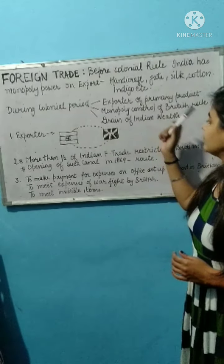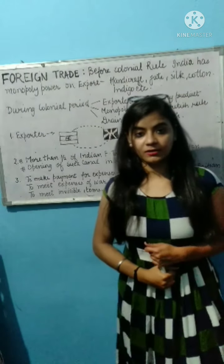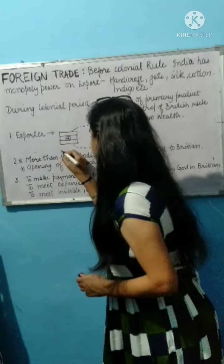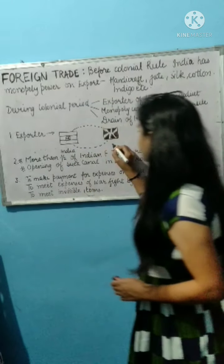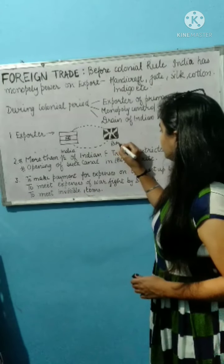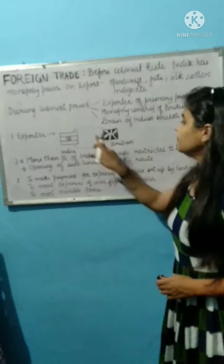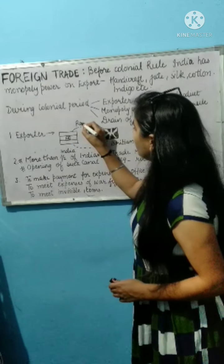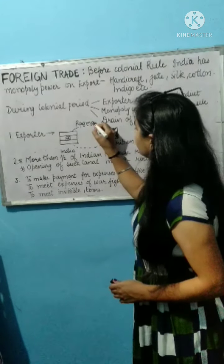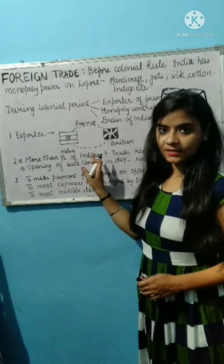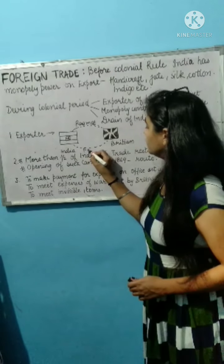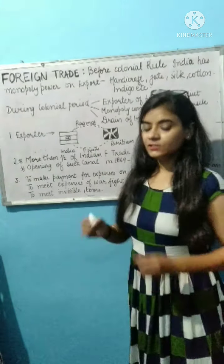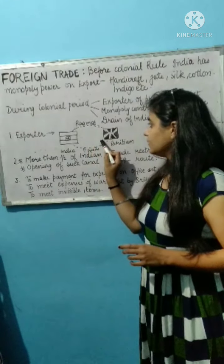First one is exporter of the primary product. We have discussed a point earlier. See this one — this is a flag of India, and that is of Britain. So this was our raw material from India going to Britain, and Britain's finished goods were sold back to our country. So the raw material came from India.